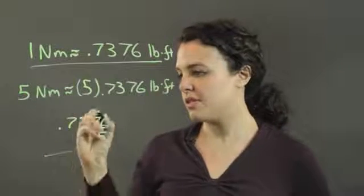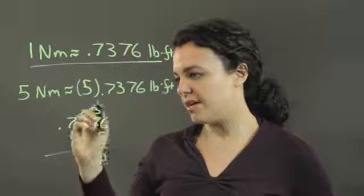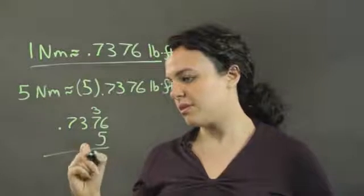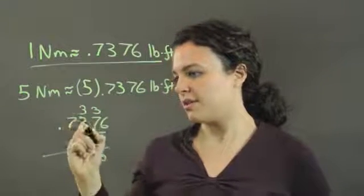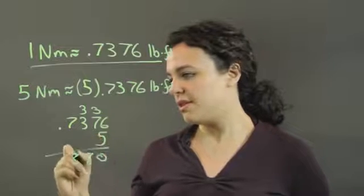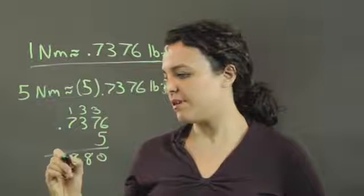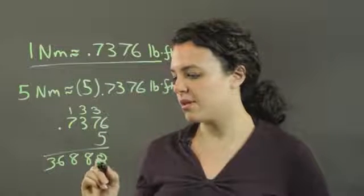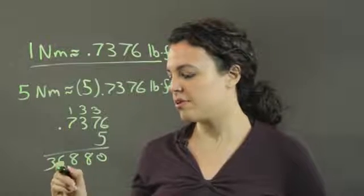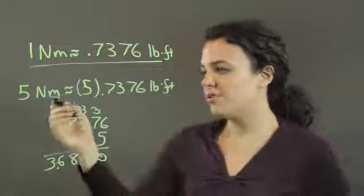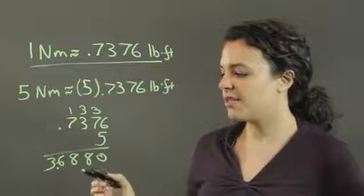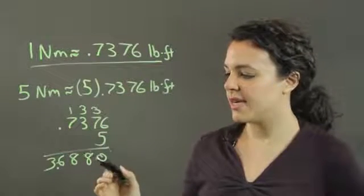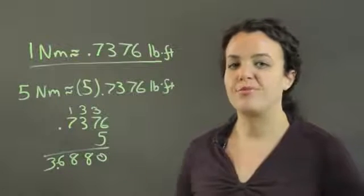6 times 5 is 30, 35 plus 3, 38, 15, 18, 35, 36... So 5 Newton meters are going to give us 3.6880 pounds-force feet.